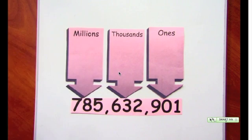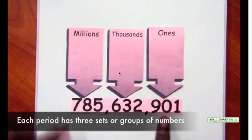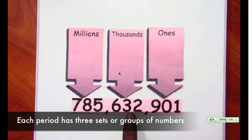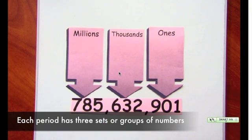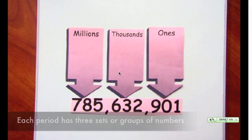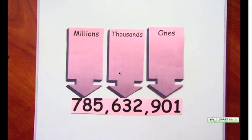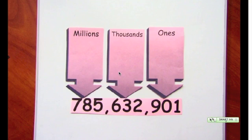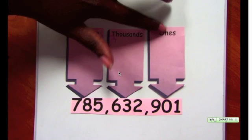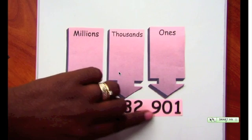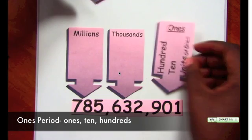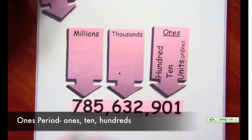Notice that each period has three sets of numbers and these numbers are separated by commas. We need to also take note of the places within each period. Each period has three places. For example, the ones period contains the digits 9, 0, and 1, and has three places.